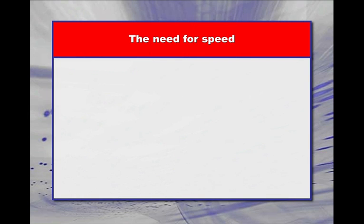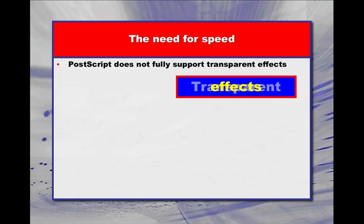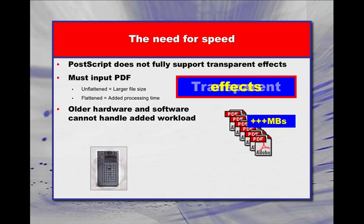The main reason for this change is the prevalence of transparent effects used by graphic artists. Because the PostScript language does not render transparency accurately, prepress operators must input PDF files into the Rampage workflow. Because these files are much more complex and larger than PostScript, they can degrade processing speed. As a result, transparency from popular layout packages can dramatically challenge older system configurations.